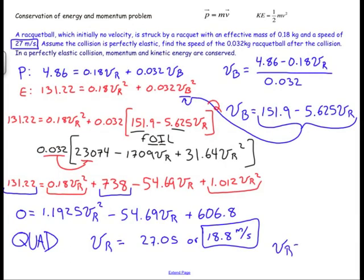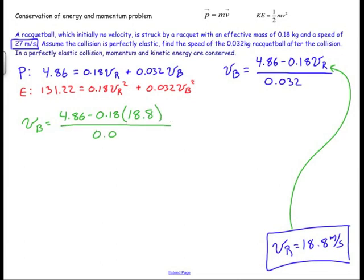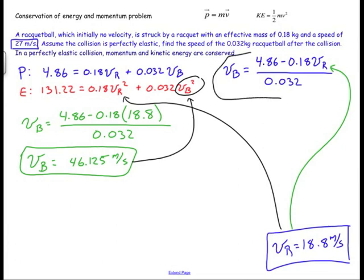So V_R = 18.8 meters per second. Now I plug that back into the expression for VB: VB = (4.86 − 0.18 × 18.8) / 0.032, which gives VB = 46.125 meters per second. Given the amount of algebra in these problems, I highly recommend going back and plugging both numbers into the other equation — in this case the conservation of momentum equation — to verify.